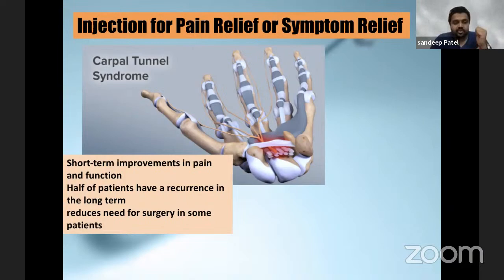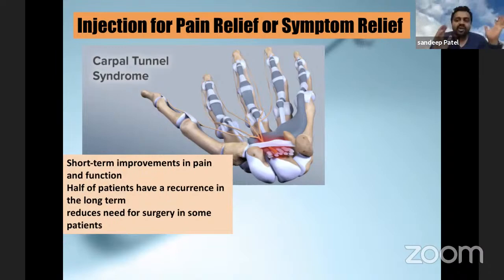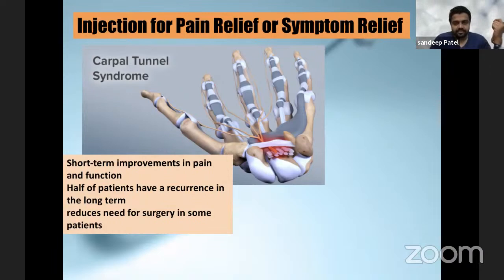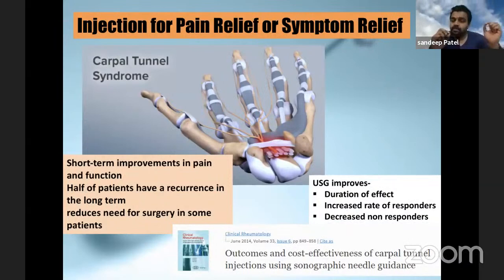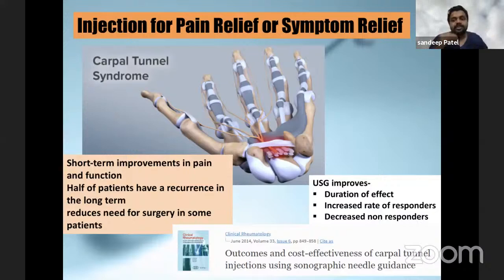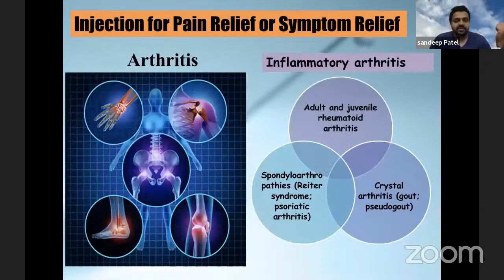Next, for pain relief or symptomatic relief, is carpal tunnel syndrome. Short-term improvement is there. Also, half of the patients will benefit and will not need surgery, but only 50%. The rest of the 50% will eventually have a recurrence in the long term, for which the definitive management is going to be a carpal tunnel release. Ultrasound guidance is important because the main problem of a blind injection in carpal tunnel syndrome is the reason for failure and decreased responders. If you want to increase the percentage of responders, you have to use ultrasound guidance to improve your results.